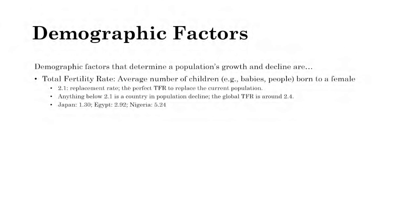You don't need to memorize TFRs for specific countries, but as reference points: Japan's TFR is 1.3, so Japan is experiencing population decline. Egypt's TFR is 2.92, and Nigeria's is 5.24, so both Egypt and Nigeria are experiencing population growth — Nigeria at a greater rate than Egypt.